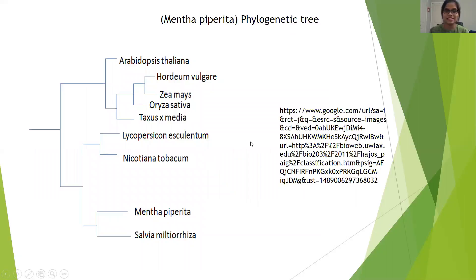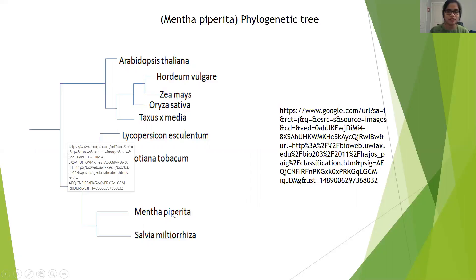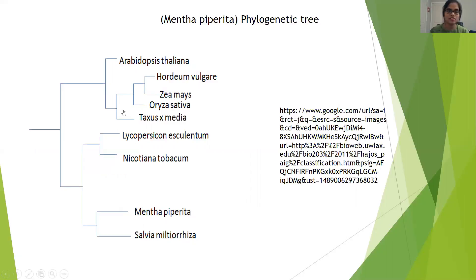This is the phylogenetic tree for Mentha piperita. Mentha piperita is the sister taxa with Salvia melissodora. These other organisms are also related to Mentha piperita in the tree.